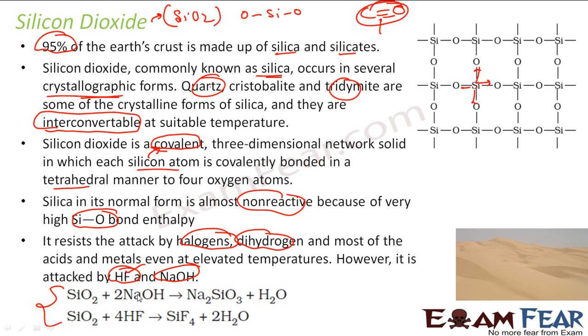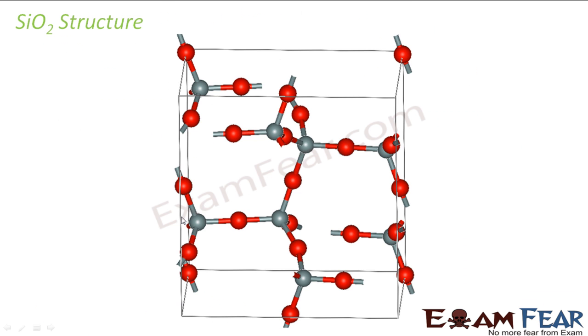Sand, if you react with sodium hydroxide, it reacts to give Na2SiO3. Sand reacts with HF to give SiF4. As I told, SiO2 - this is the structure. This is a three-dimensional view of SiO2. This is one silicon molecule combined with two oxygen, and this is another silicon molecule combined with two oxygen. That is why it forms this kind of three-dimensional structure.